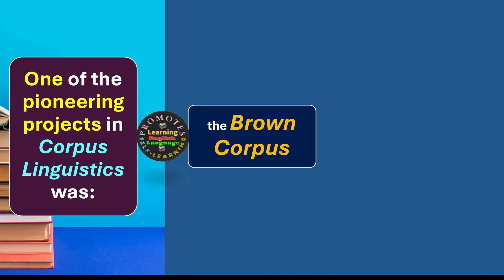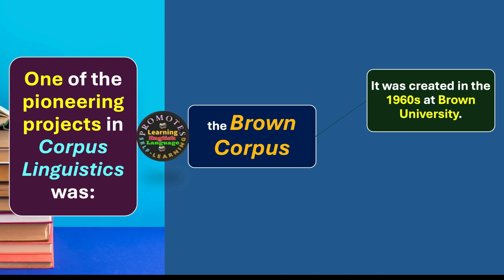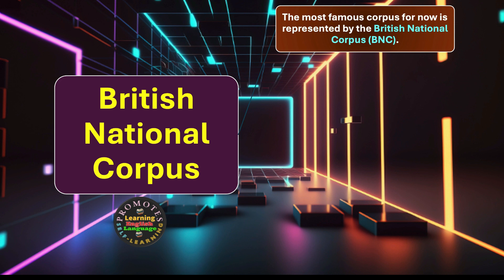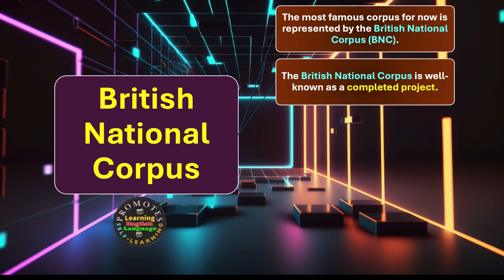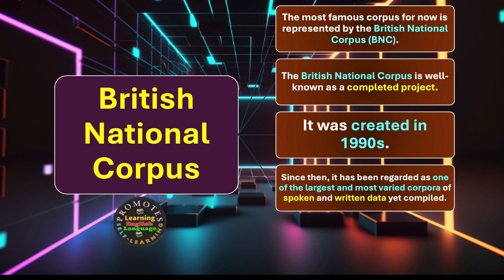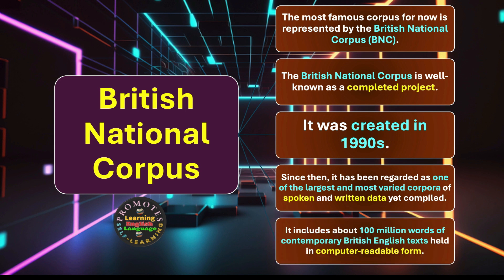One of the pioneering projects in corpus linguistics was the Brown Corpus, created in the 1960s at Brown University, which contained one million words of American English text. The most famous corpus is now represented by the British National Corpus, BNC. It was created in the 1990s and has been regarded as one of the largest and most varied corpora of spoken and written data yet compiled. It includes about 100 million words of contemporary British English texts held in computer-readable form.